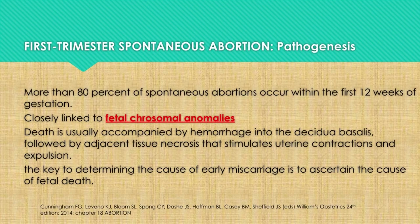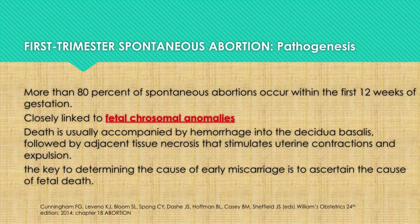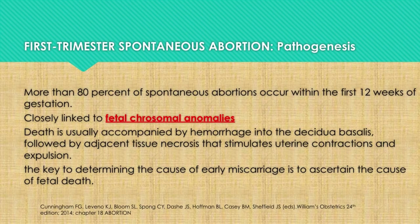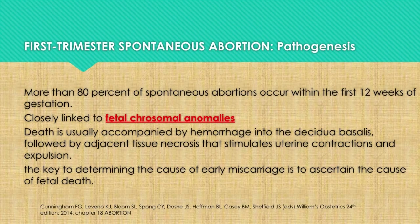What is the pathogenesis of first trimester spontaneous abortions? More than 80% of spontaneous abortions occur within the first 12 weeks of gestation, and this is closely linked to fetal chromosomal abnormalities. Death is usually accompanied by hemorrhage into the decidua basalis, followed by adjacent tissue necrosis that stimulates uterine contractions and expulsion. The key to determining the cause of early miscarriage is ascertaining the cause of fetal death.